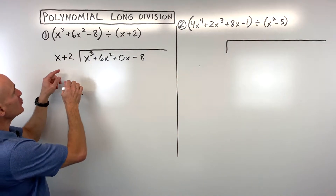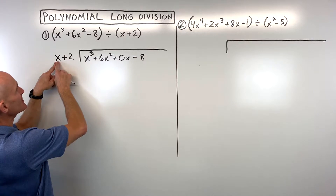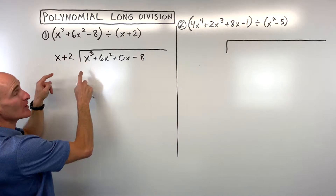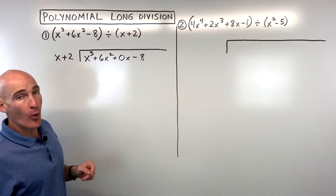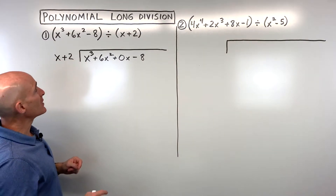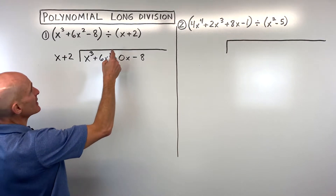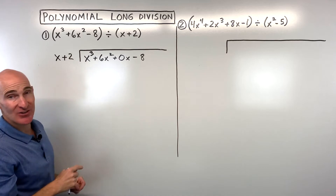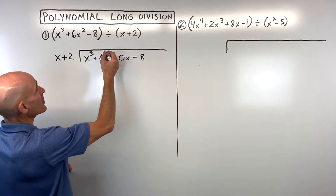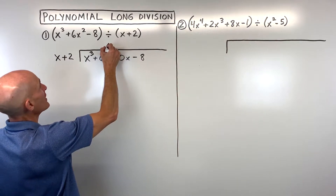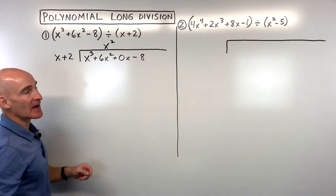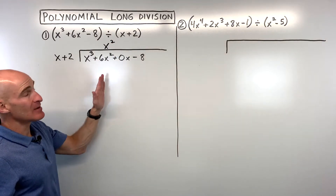So now here's what we do. We say how many times does x, this first term, go into the first term here — how many times does x go into x cubed? Or the way I like to do it: what times x equals x cubed? That's going to be x squared. I'm going to put an x squared right here, lining the x squareds up to keep everything organized.